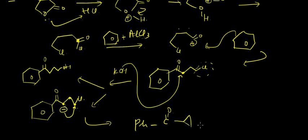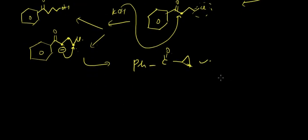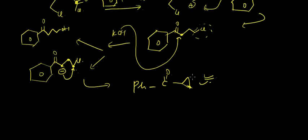So that product is also formed. Let's take another example. In this case, this is a ketone and this is also a ketone — two types of ketones can be formed.